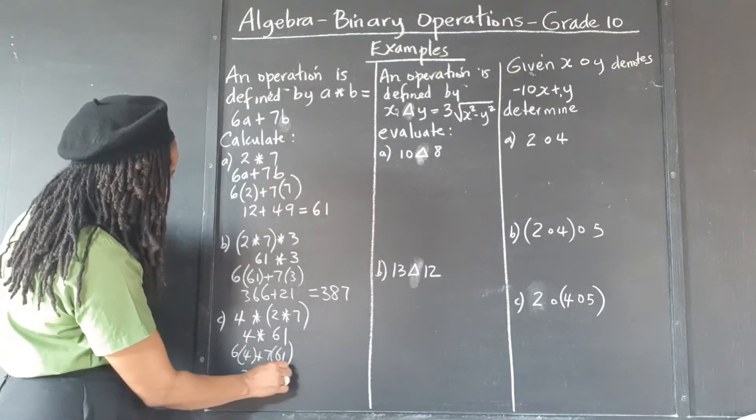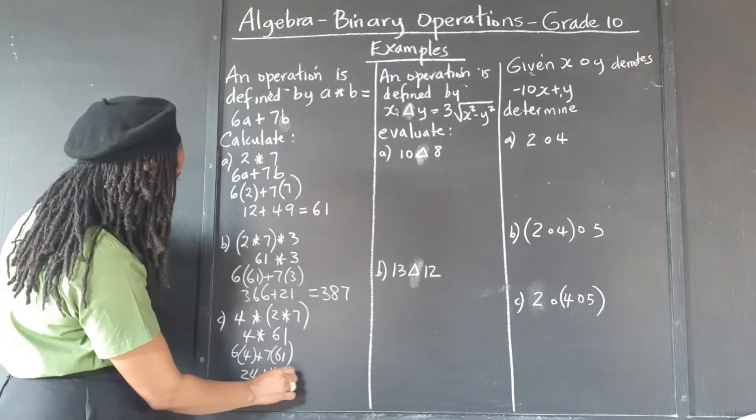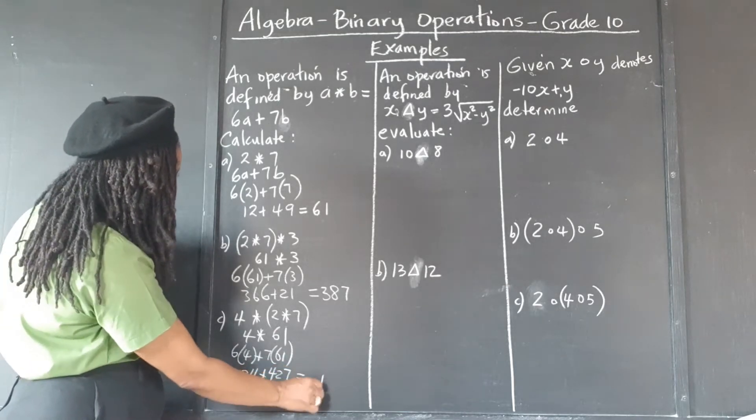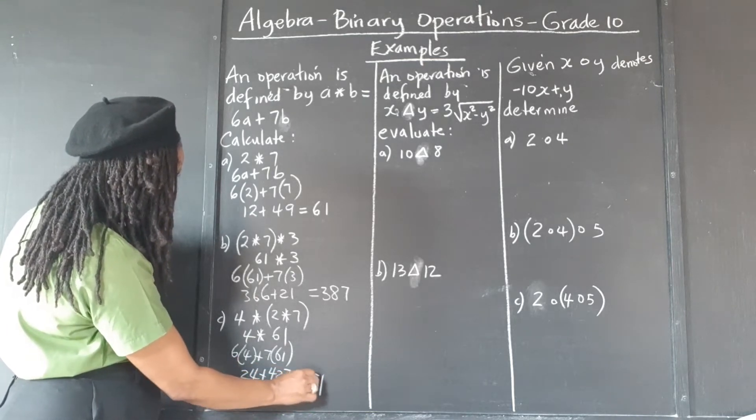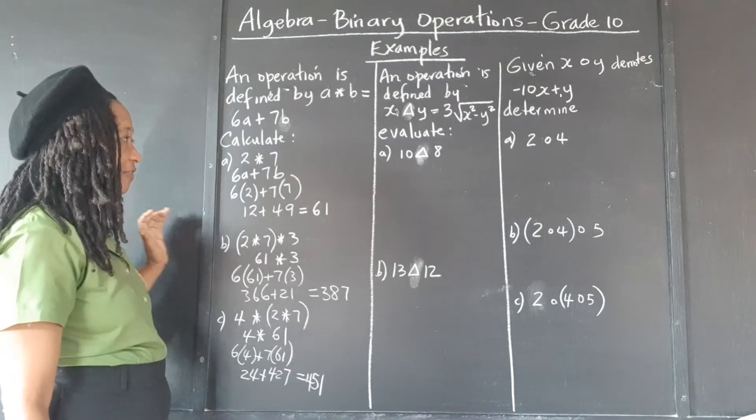6 times 4 is 24, 7 times 1 is 7, 7 times 6 is 42, and this gives us 4 plus 7 is 11, 2 plus 1 plus 2 plus 4 is 15, and 451.